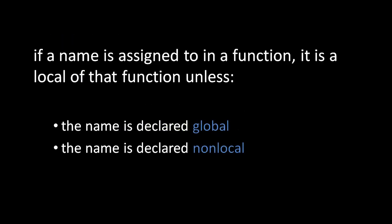To sum up the rules: if a name is assigned to in a function, it is a local of that function unless it is declared to be global or nonlocal in that function. The difference between the two is that global makes it a variable from the module, while nonlocal means it must be a variable from some enclosing function.